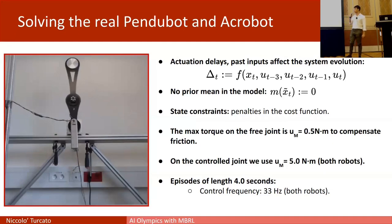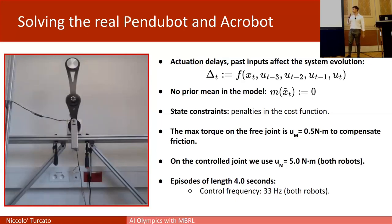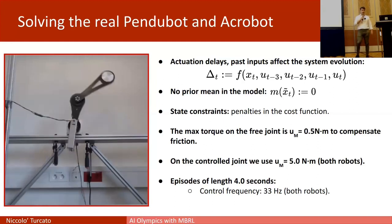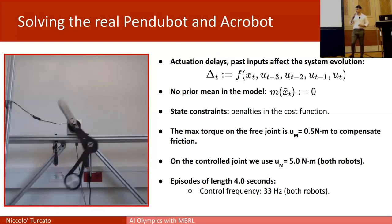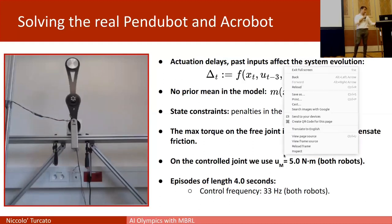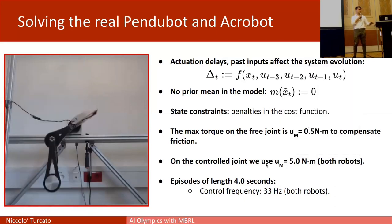We applied friction compensation on the free joints of the robots. Instead of a single radial basis function network, we used a dual RBF network — one for each joint. For the free joint we used a maximum torque of 0.5 Newton-meters, while the control joint used the full 5 Newton-meters available. The algorithm was applied with episodes of 4 seconds length at a control frequency of 33 Hz for both robots.